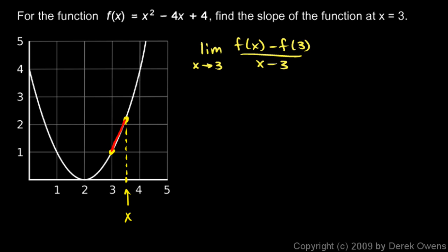Now you see this expression involves f(x), which we know, and it also involves f(3), which we can find out. So let's find f(3) real quick. f(3) is going to be 3 squared minus 4 times 3 plus 4. Just putting in a 3 right there. And that's 9 minus 12 plus 4. That comes out to 1.